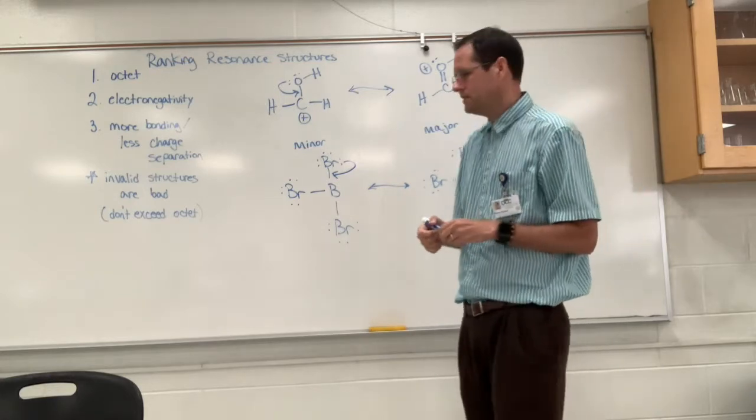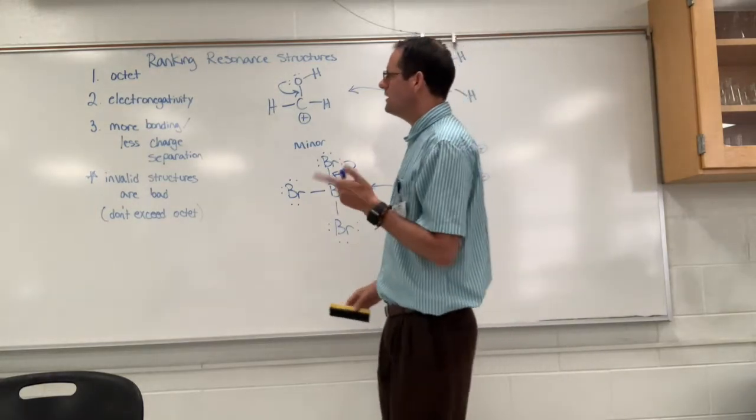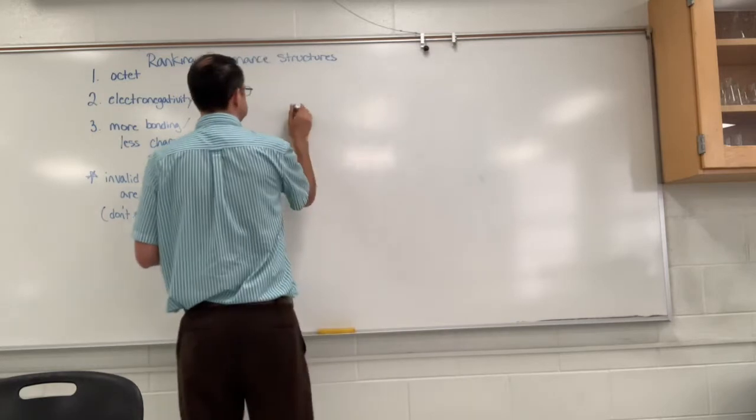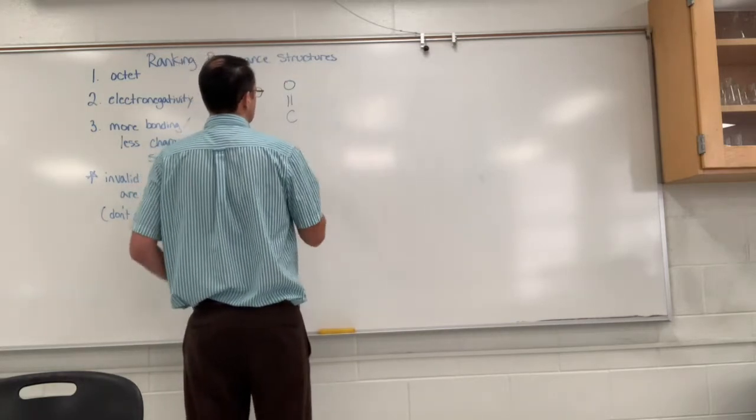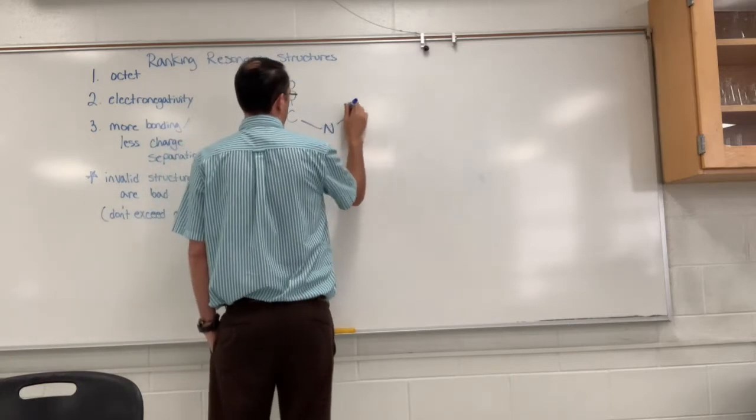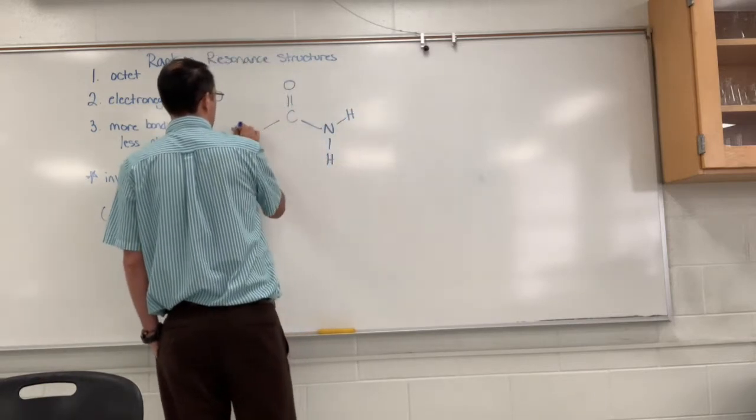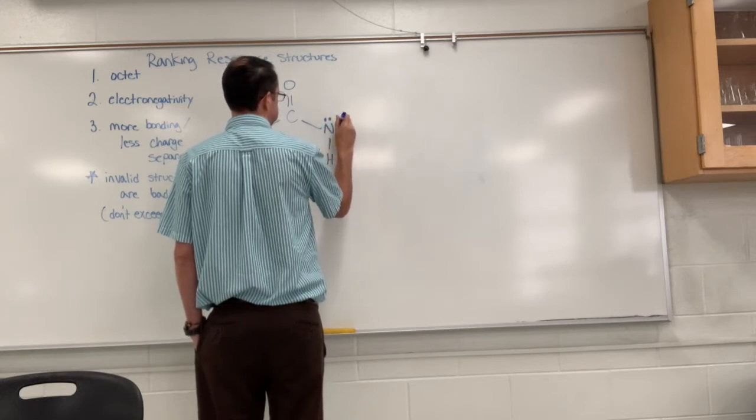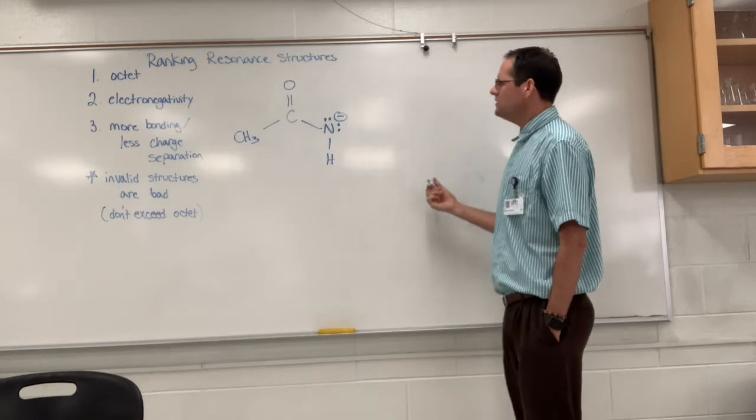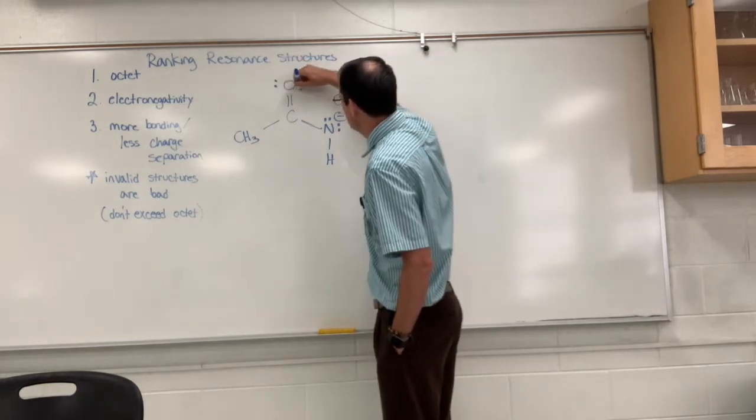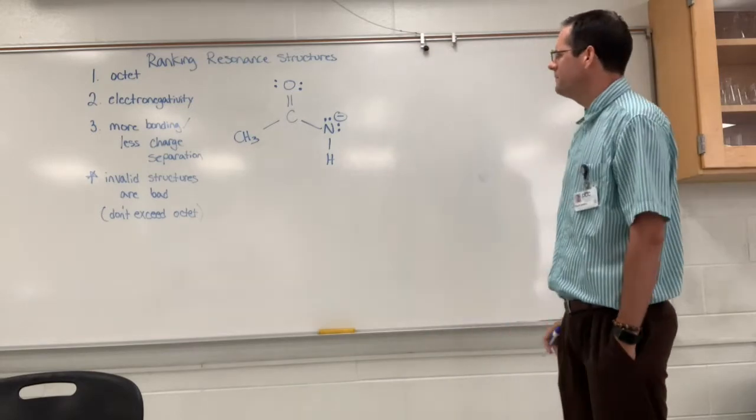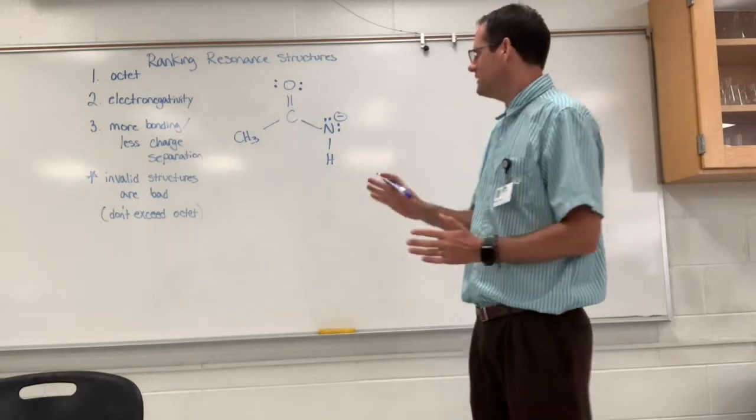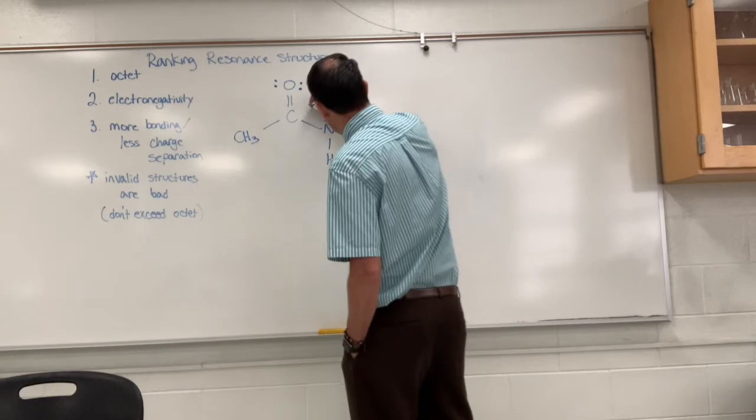Let's look at electronegativity. This structure here is our starting structure. If you're counting things, everything has an octet except the hydrogens, but everything has an octet, it's good. So let's generate and draw an additional resonance structure.